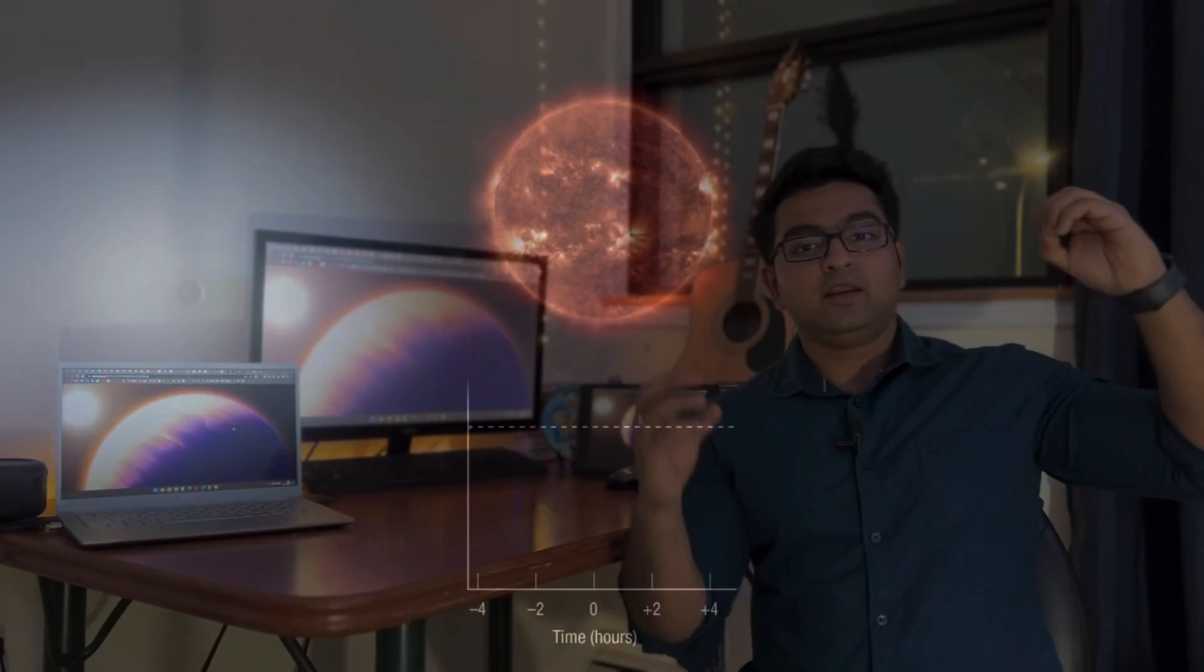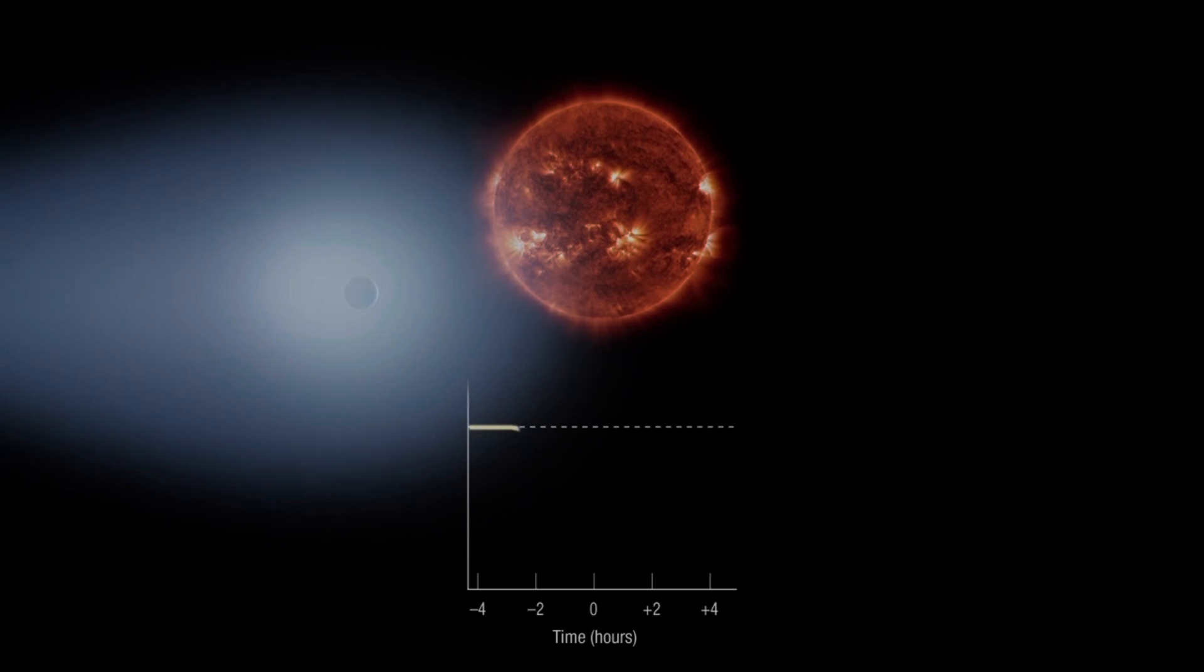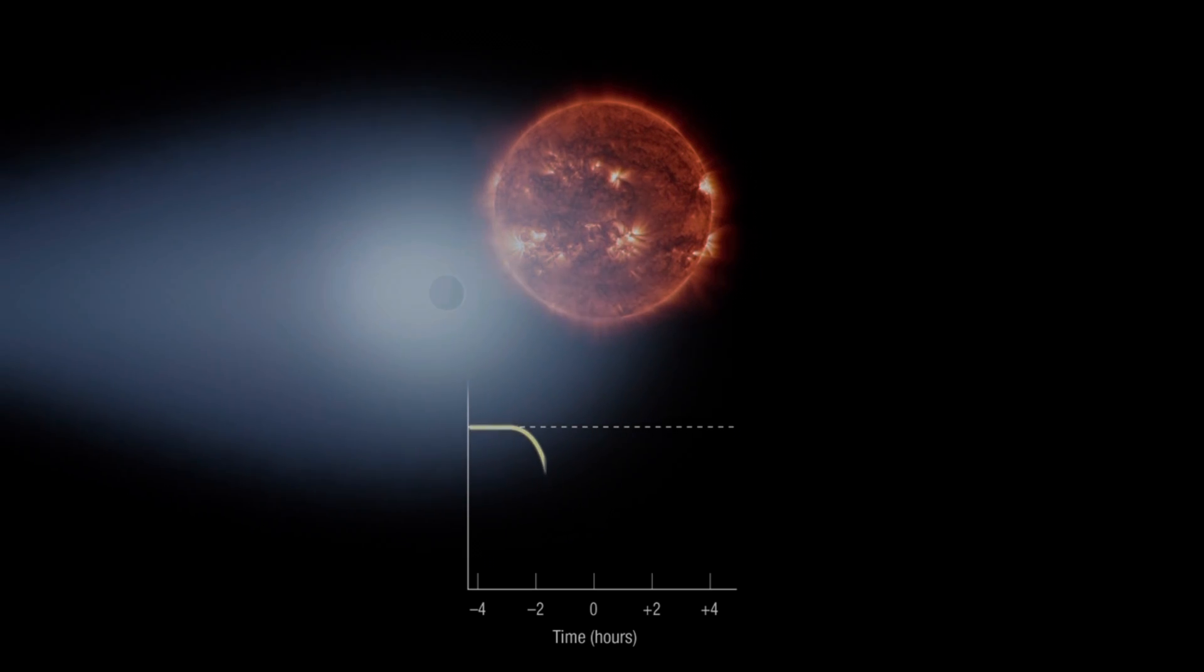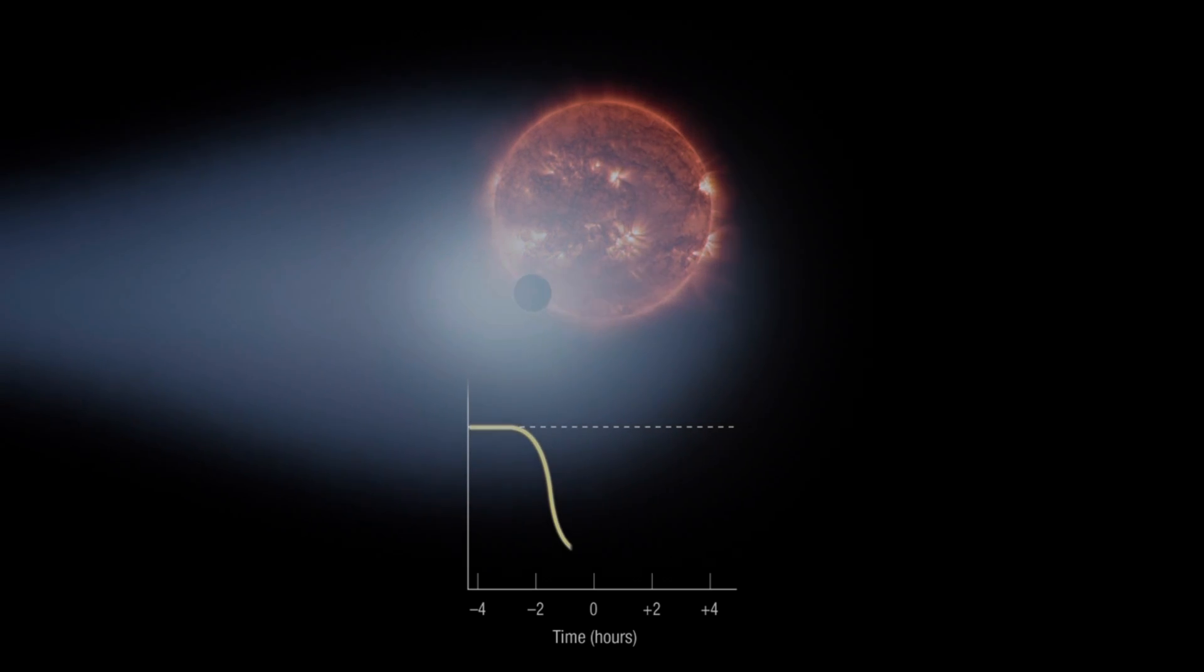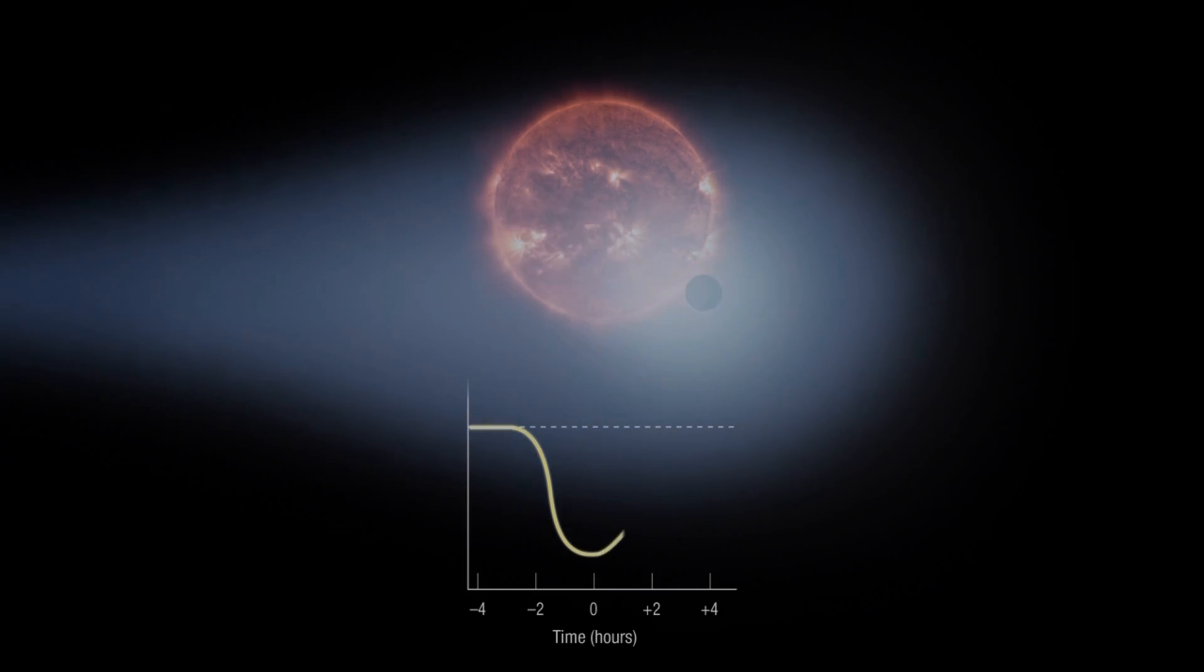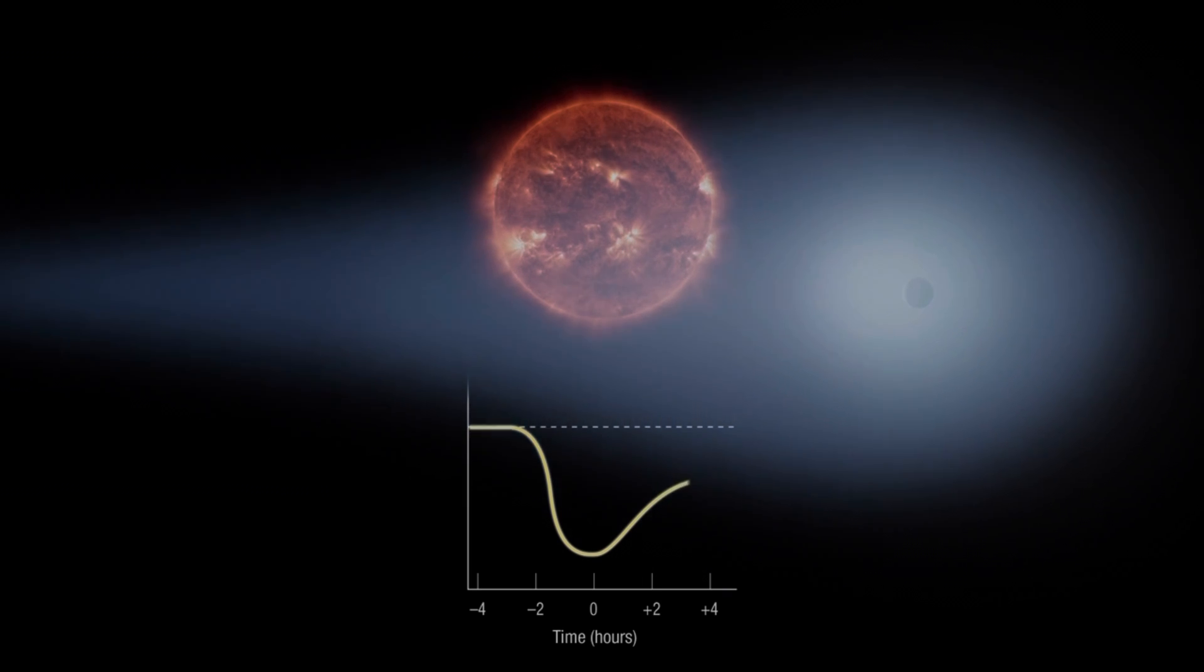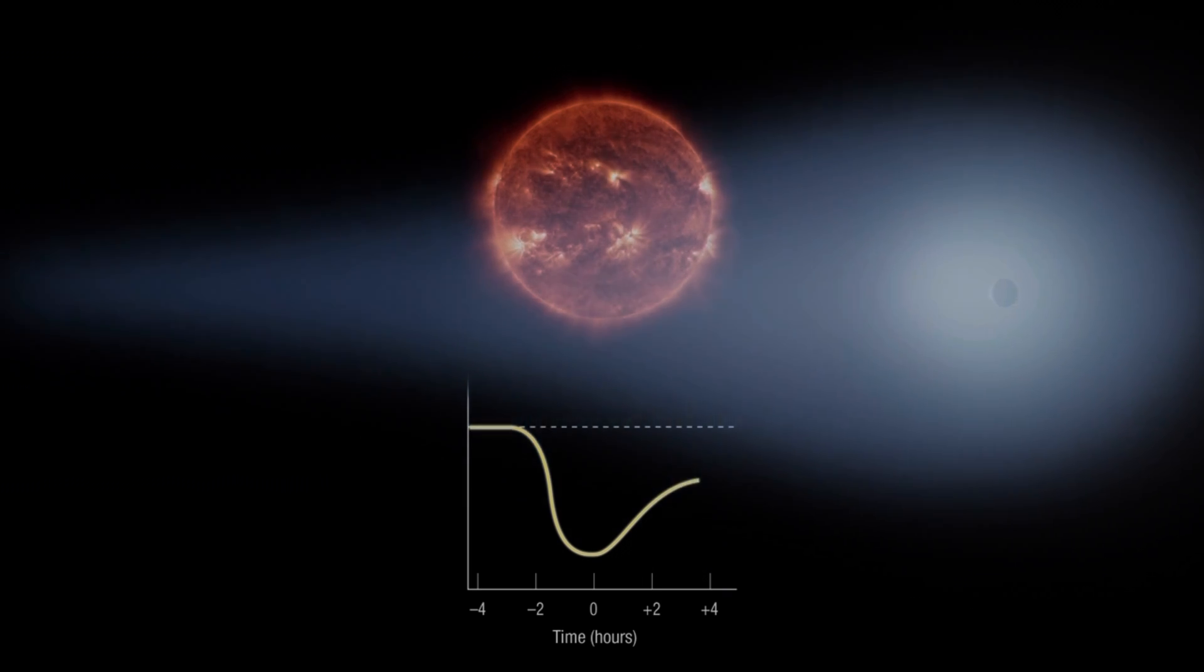What transiting essentially means is you have a star and you're directly looking at the star. If some object or some body passes in front of that star, some of the light from the star reaching you will be blocked. Depending on how much light has been blocked, you can pretty much tell a lot about the body, how much time it took to cross that star, and so on.